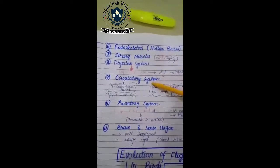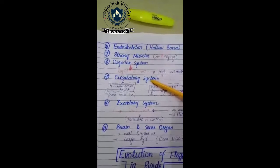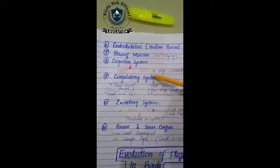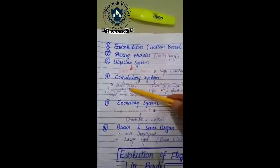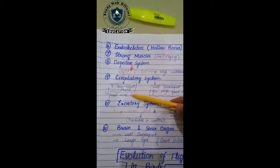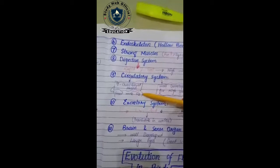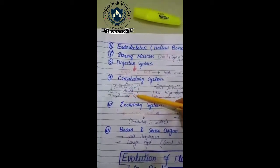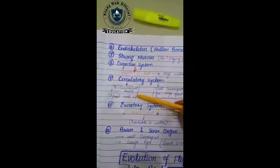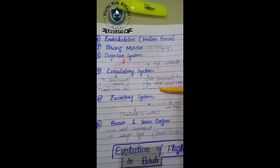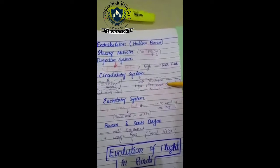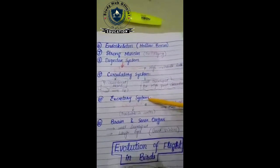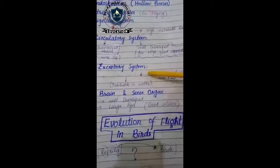The next character is circulatory system. Their circulatory system is also better developed — they have a four-chambered heart. Because they have to perform a lot of activity during flight, they need a maximum supply of oxygen. Their four-chambered heart is well-developed and performs high-speed circulation.